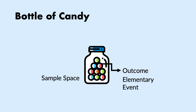To further understand the concept of sample space, let me give a brief example about a bottle of candy. Imagine you have a bottle of candy. Each candy is an outcome — something we can take out from the bottle and see which candy we got. It is an elementary event. But the bottle — the set of all candies — is the sample space.